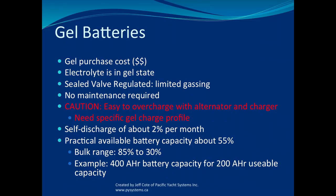Here's why people choose gel: it gives you 55% of usable battery capacity — compared to flooded at 35%. That means you only need a 400 amp hour battery bank to give you 200 usable amp hours. You can see how energy density comes into play: you can either have more usable capacity with the same number of batteries, or have fewer batteries with the same usable capacity.